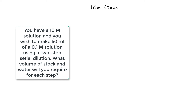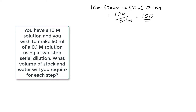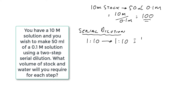We've got our 10 molar stock and we wish to produce 50 mils of a 0.1 molar solution. If we look at these two concentrations, 10 molar divided by 0.1 molar is equal to 100, so effectively we've got a one-in-100 dilution. We could do two dilutions to get to 100 using serial dilutions: a one-in-10 dilution followed by another one-in-10 dilution, which gives us a one-in-100 dilution, since 10 times 10 equals 100.